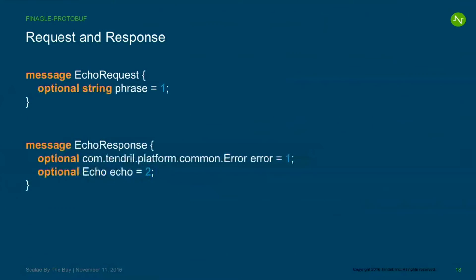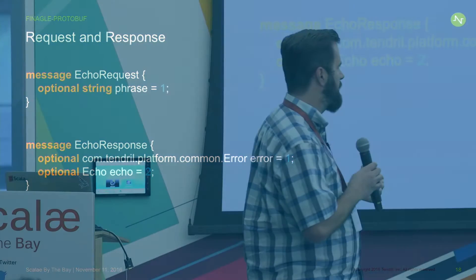At Tendril we've taken the pattern of using separate request and response envelopes with the data inside. Our echo request has its parameters. Our response has an error wrapper — which hints at our error handling approach — and then our echo response, which is the application-level response we got back from the server.